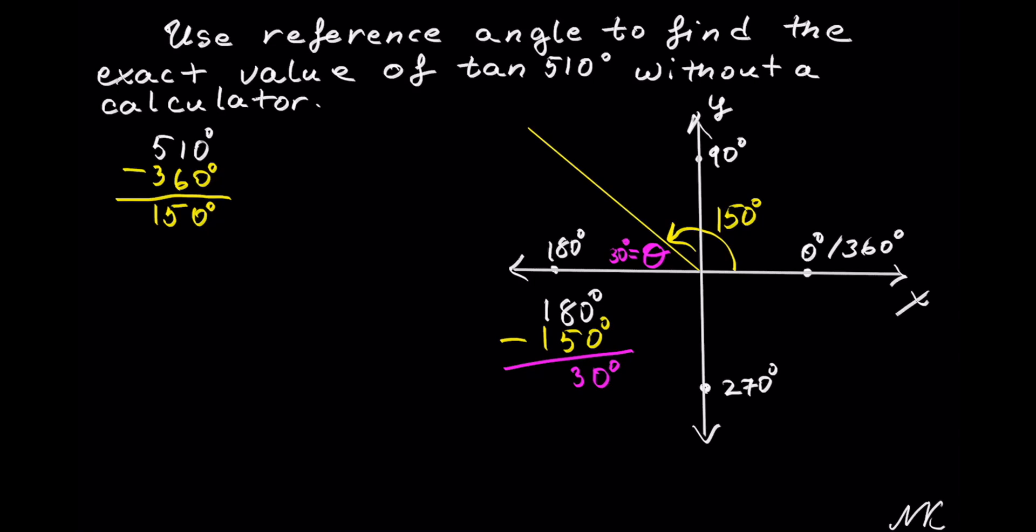Now that we found the reference angle, to find value of tangent of 510 degrees, we know that tangent of 30 degrees is equal to radical 3 out of 3. So tangent of 510 degrees is also equal to radical 3 out of 3.